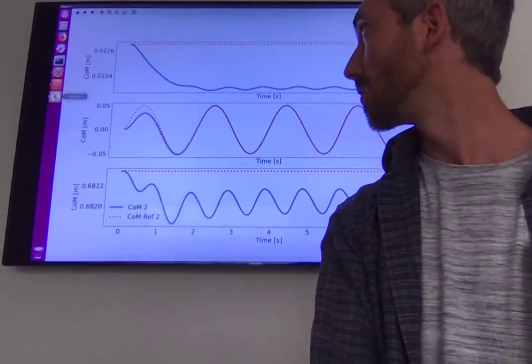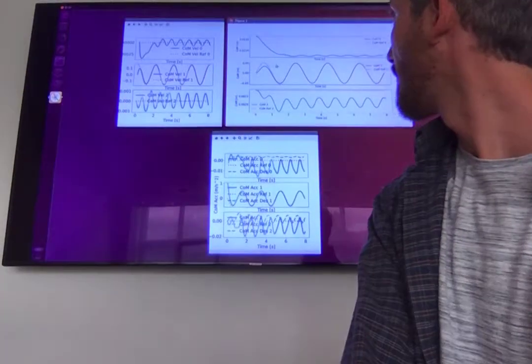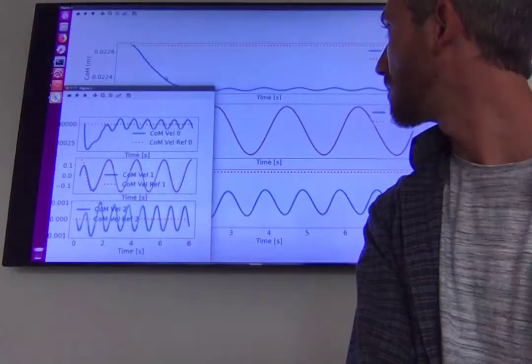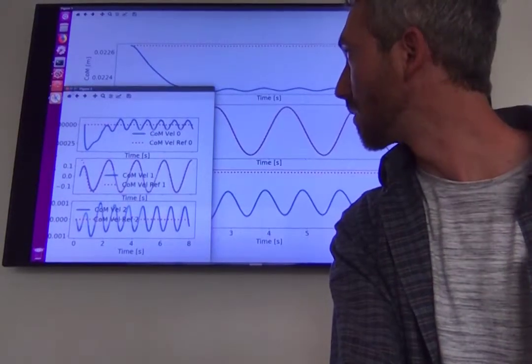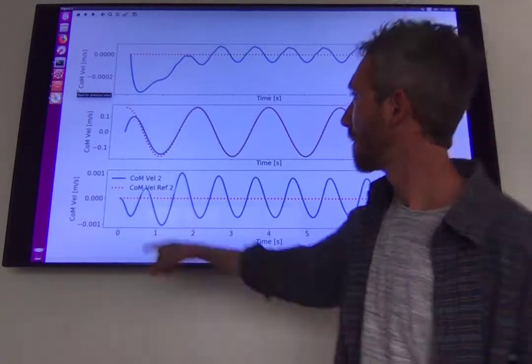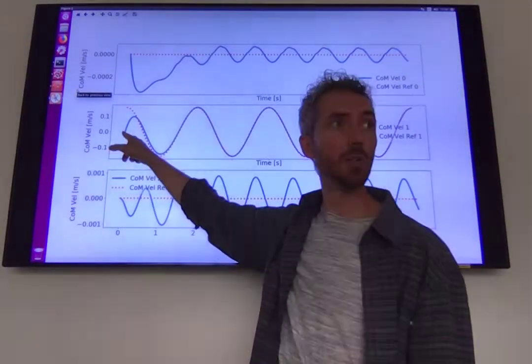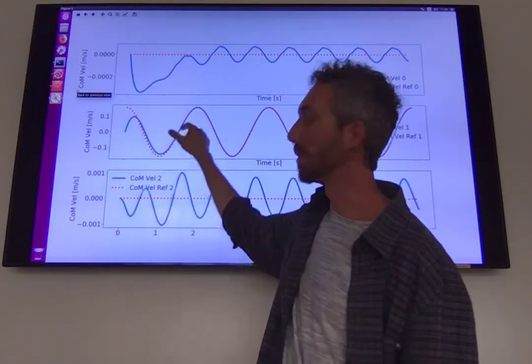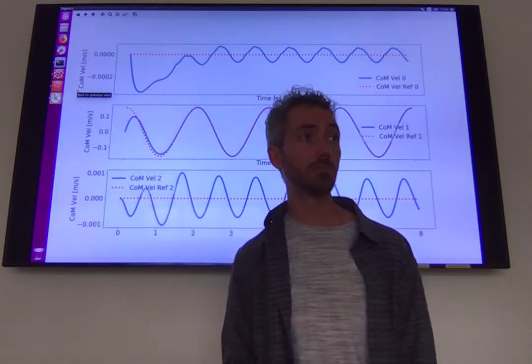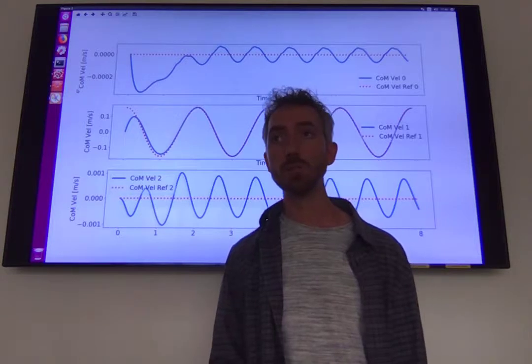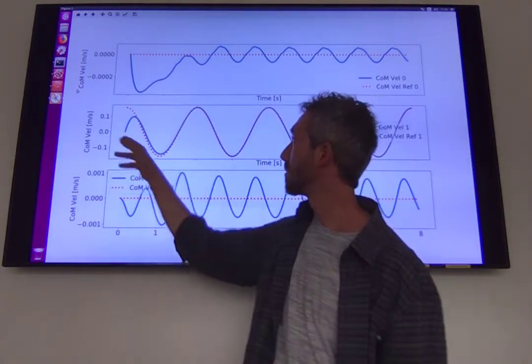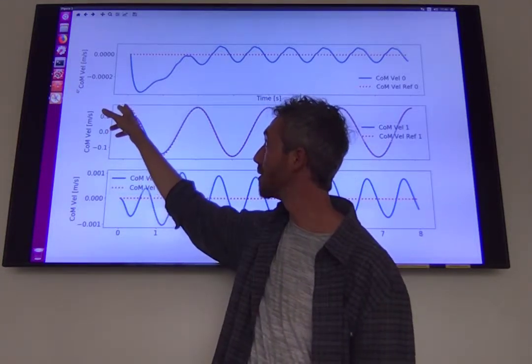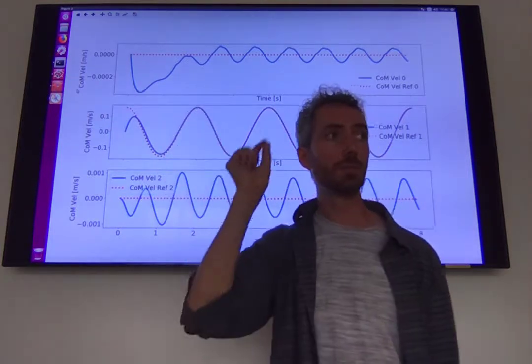Yeah, exactly. Since it's a sinusoid, at the beginning the velocity is non-zero. So the robot starts with a zero velocity, but the reference starts with a non-zero velocity. So it takes a while to get back on track. That's the only reason. If we started with the right velocity, it would track perfectly from the very beginning.